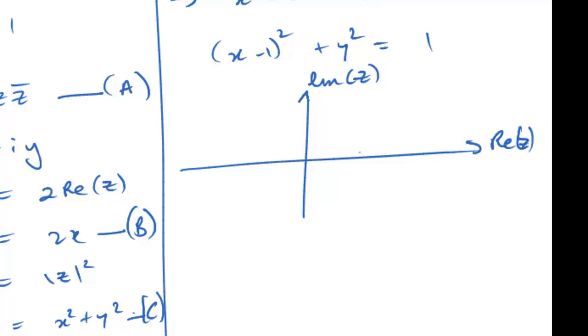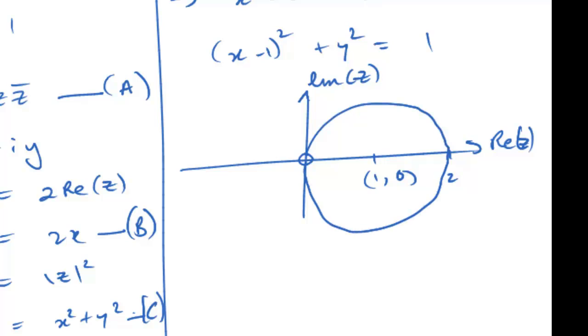And this locus is a circle centered at (1, 0) of radius 1, which means it's going to come across to the origin. But we already recognize that the origin cannot be part of the domain. So here is your locus description.